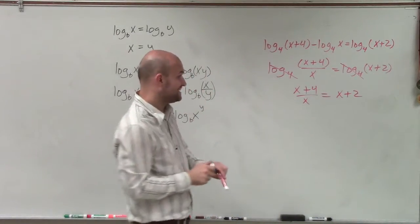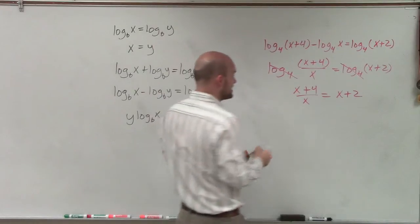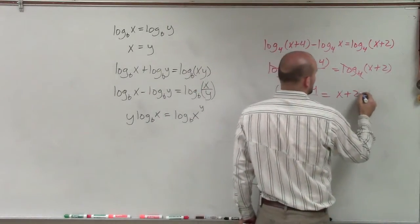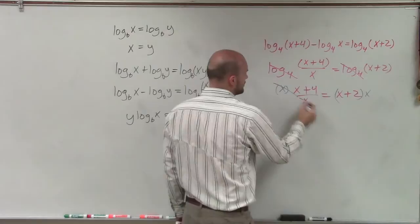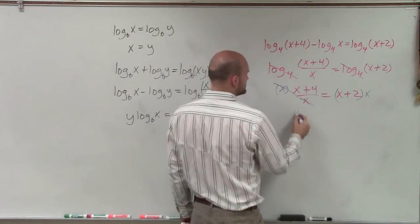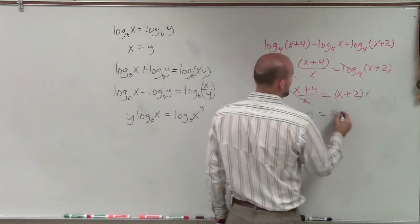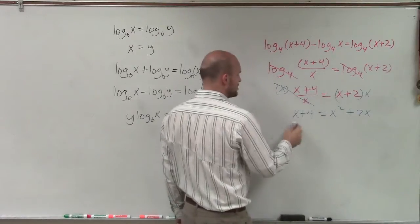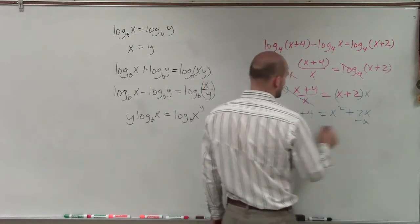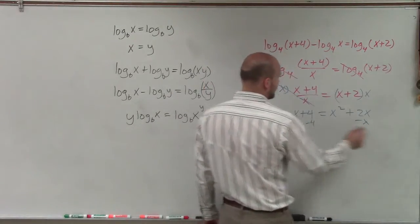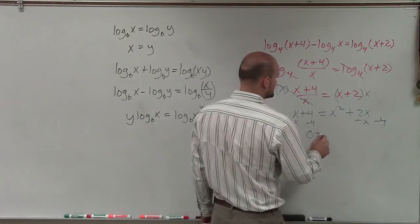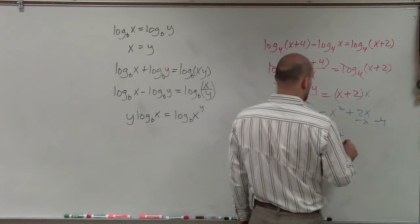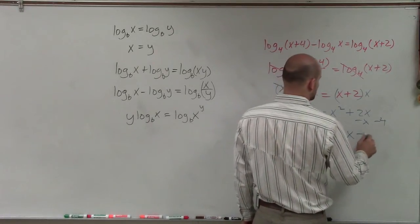Now, to solve for x, I need to get the x off the bottom, so I'm going to multiply by x on both sides. That divides to 1, so I'm left with x plus 4 equals x squared plus 2x. To solve for this, I'll subtract x on both sides and subtract 4 on both sides, so I'm left with 0 equals x squared plus x minus 4.